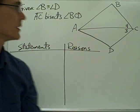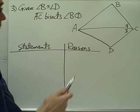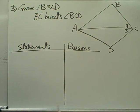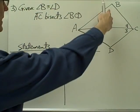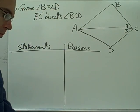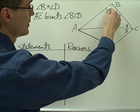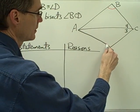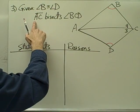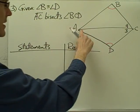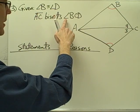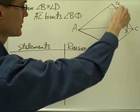Example number three. Again I have another diagram of two triangles, and I'm given that angle B is congruent to angle D — let me go ahead and mark that. I'm told segment AC, which is this segment here, bisects angle BCD — that's this angle over here.